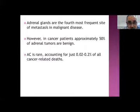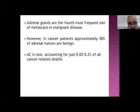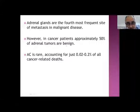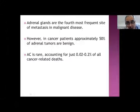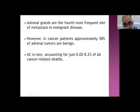The adrenal glands are the fourth most frequent site of metastasis in malignant disease, after liver, lung, and bone metastasis. However, this is very important: in cancer patients, approximately 50 percent of adrenal tumors are benign. So when a case is referred for ultrasound to stage pancreatic, lung, or GI tumors and we find a suprarenal mass, this is not necessarily metastasis — it carries only a 50 percent likelihood of being metastatic.